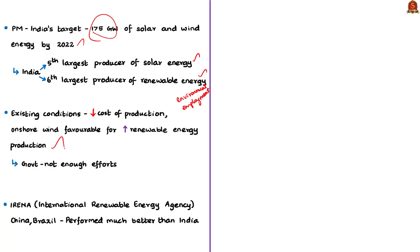The author tells that existing conditions — such as cost of production and availability of onshore winds necessary for wind energy production — are favorable for increasing renewable energy production. A few years back, photovoltaic cells, which are the prerequisite for generating solar energy, were very costly. But with more technological advancements, the cost of producing photovoltaic cells has totally reduced, so they are quite cheaply available now. Because of these technological advancements, the cost of generating power from renewables is now more or less the same as generating power from fossil fuels like coal and oil. But the author's main point is that India has not been able to make full use of the reduction in costs of renewable energy components and the government has not put enough efforts to take advantage of this favorable condition.